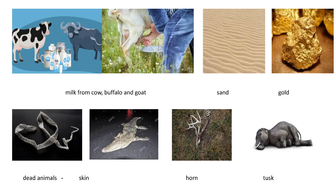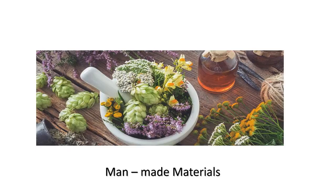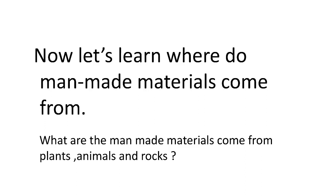More natural materials include milk from cow, buffalo and goat, sand, gold, dead animals, and their skin, horn and tusk. Now let's learn where man-made materials come from.